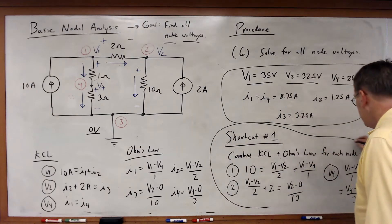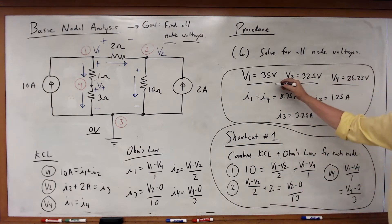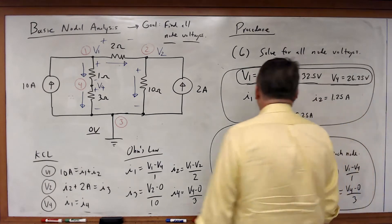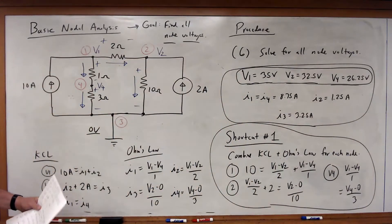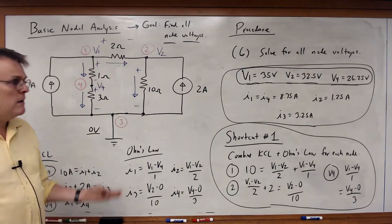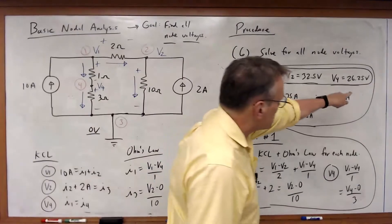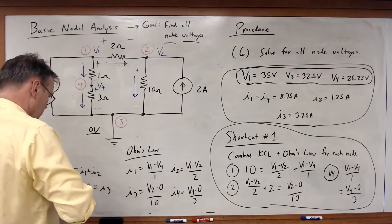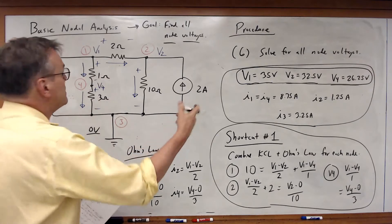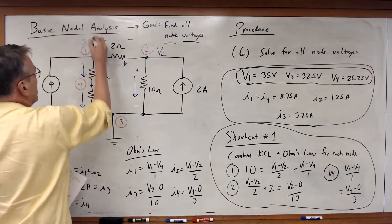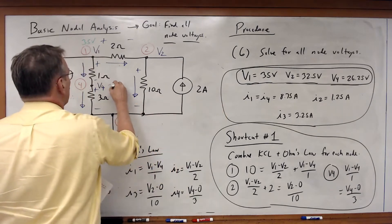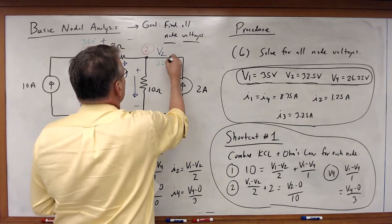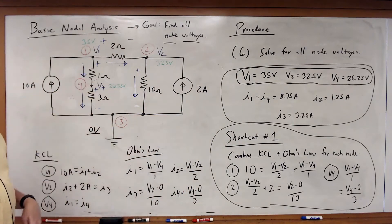If I go ahead and solve for these, what I'm going to get are three voltages. Now, if you need to know those currents, that's not a problem. If you know the voltages, the currents are easy. In this case, V1 is 35 volts, V4 is 26.25 volts, and V2 is 32.5 volts. Then everything becomes easy.